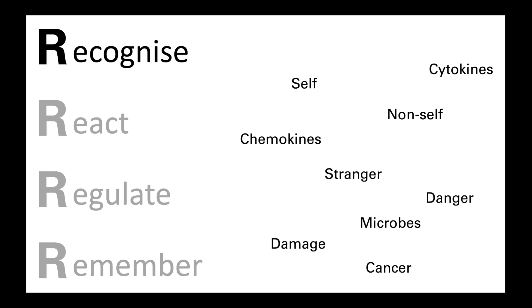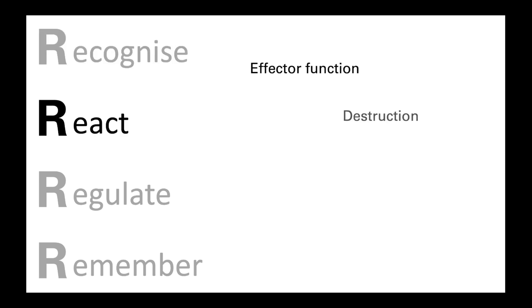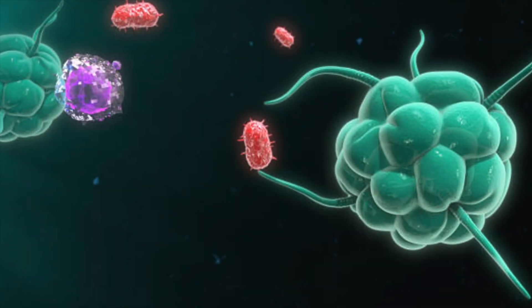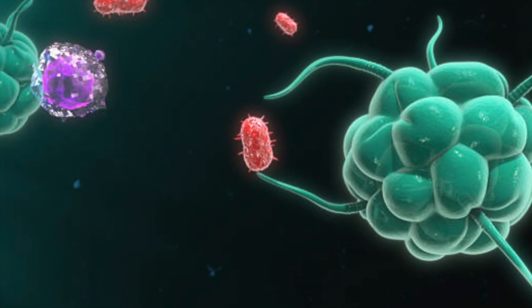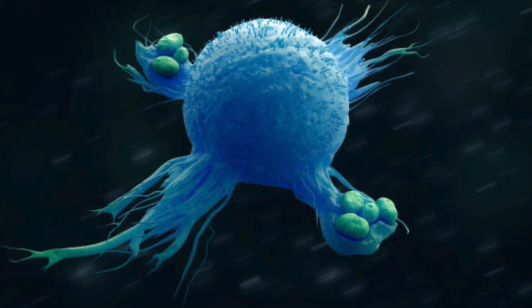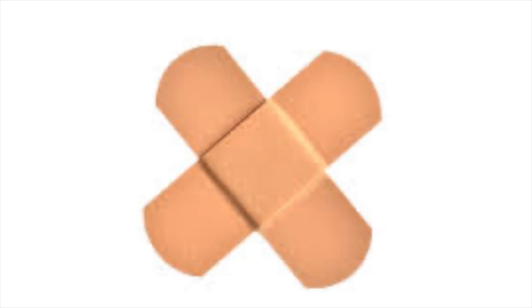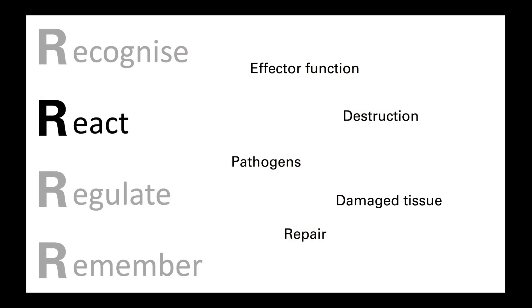Once immune cells identify or are directed towards the threat, they need to be able to react. They do this through a series of targeted effector functions, which includes the destruction of pathogens or infected cells, the removal of damaged tissue, and subsequent wound repair. The nature of the response is partially shaped by the types of cytokines and chemokines that are present in the region of the threat.